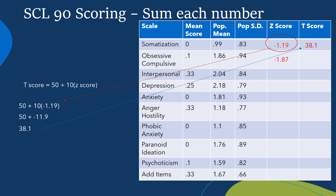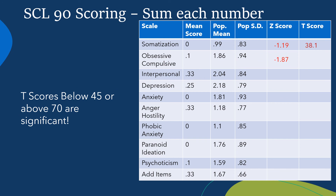You do this for each one of the areas you scored. A t-score that's below 45 or above 70 is significant. For this individual, their somatization score of 38.1 is significant because it falls below the expected range of 45 to 70. If a number is really close to 45 or 70 but still within that range, that's fine. Many numbers will be close to those boundaries because the standard deviations aren't spread out very much. I hope that gives you an idea of how to score the SCL-90.